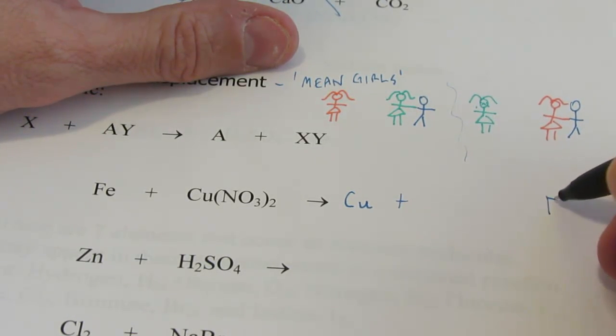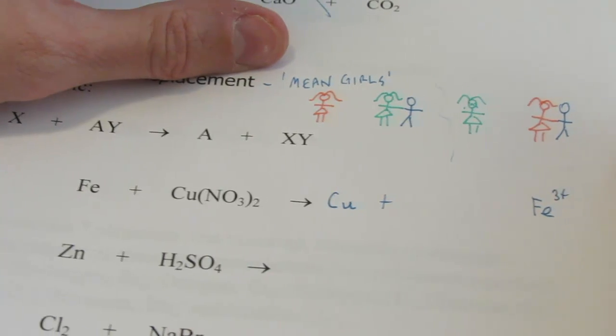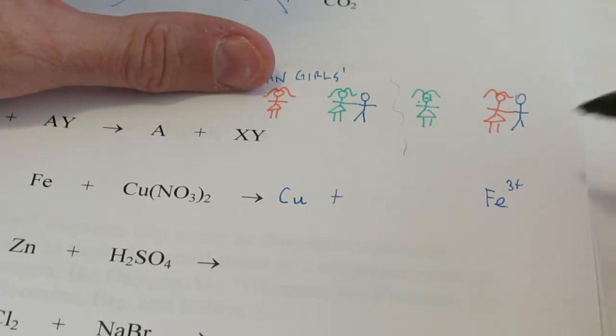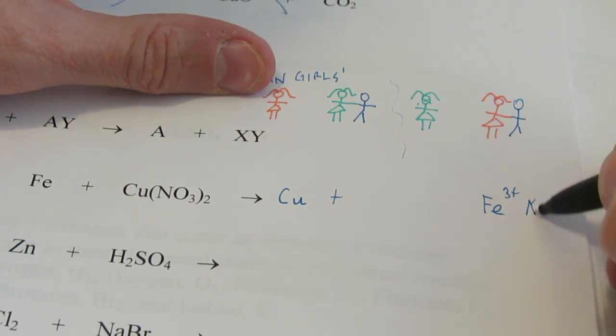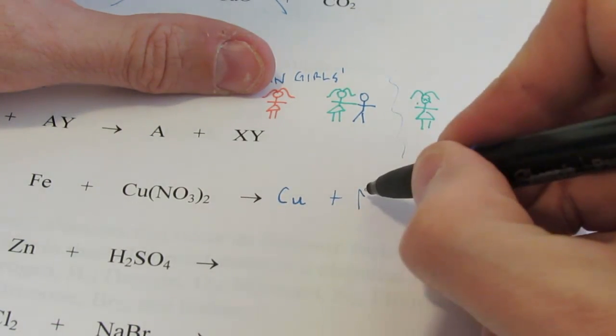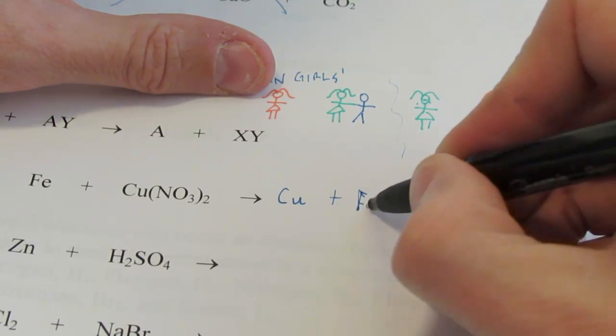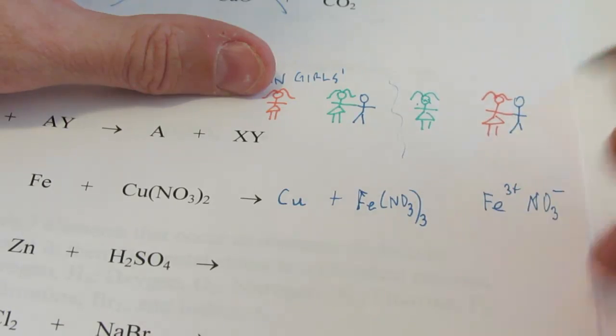Now remember, what did we say earlier about iron's most common oxidation state? It's 3+. It can also be 2+, I know, but we usually find it fully oxidized in its 3-plus state. And nitrate's one of your polyatomic ions. It's NO3-1. So we end up with Fe(NO3)3. We form iron 3 nitrate.